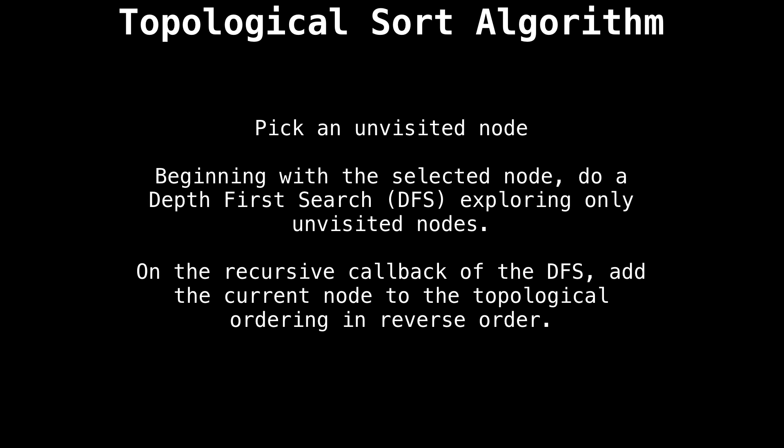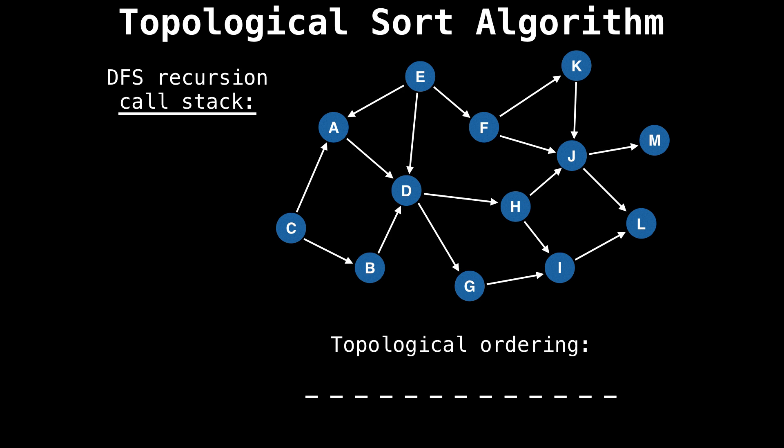Let's do an example and things will become much clearer. Here's a directed acyclic graph that we want to find one of many topological orderings for. As the algorithm executes, I'll be keeping track of the call stack on the left hand side. And in case you're curious, I will also be posting the current topological ordering at the bottom of the screen.